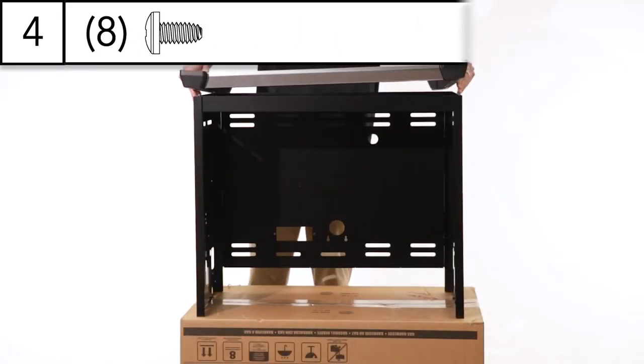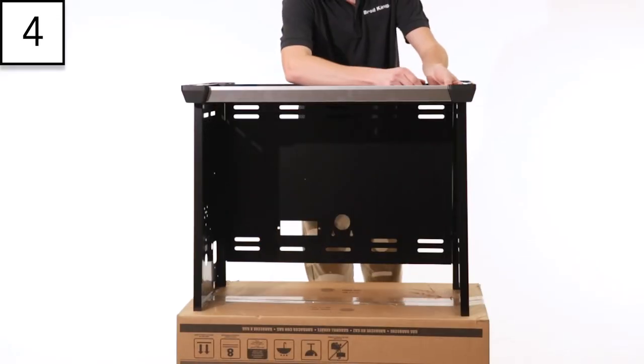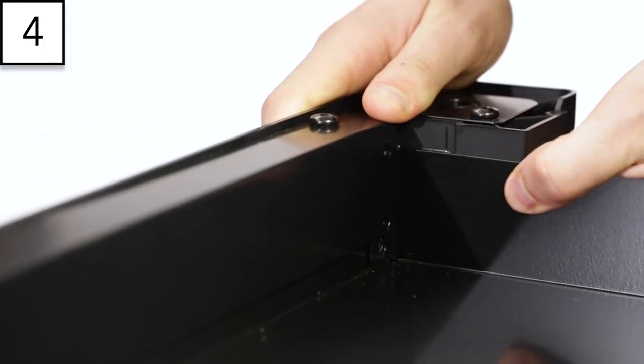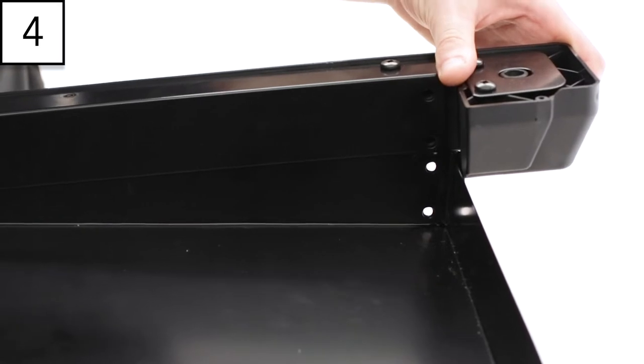Step 4. Align the caster bracket assembly with the base and fasten together with the hardware provided. The caster bracket has a slot that secures the base, making it extra sturdy once assembled.